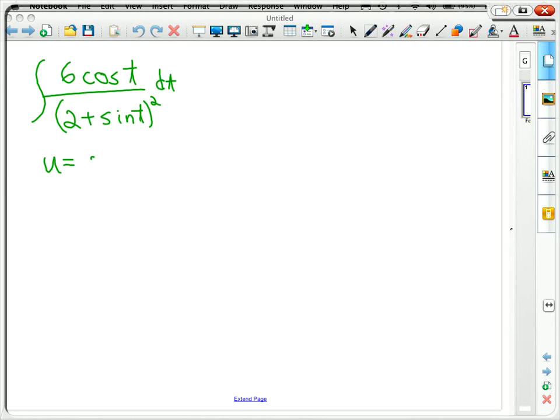So in this case I'm going to make U equal to 2 plus sine of T because I know cosine is the derivative of sine and there is a cosine up there. So when I figure out what DU is, I know DU is equal to cosine of T DT.